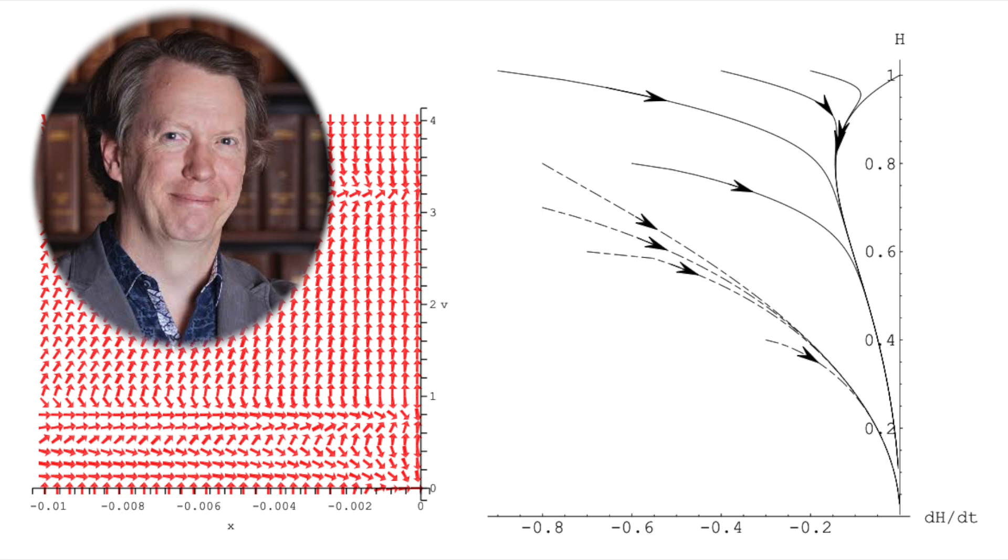Like what? Some of these theories predict these things called singularities. Singularities are these points where our current understanding of physics breaks down. So is that like a sign that the theory is wrong? Not necessarily. It might just mean that we need to refine our understanding of physics to figure out what's really happening at these extreme points. So it's like those singularities are clues pointing towards new physics we haven't discovered yet. They're like these tantalizing hints that there's still so much more to learn about the universe.